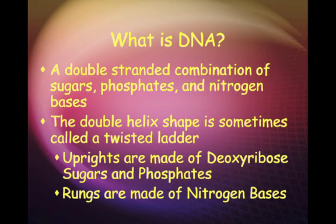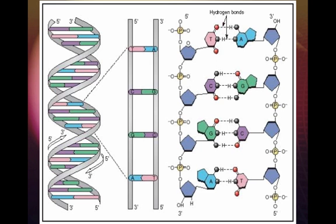DNA is a double-stranded combination of sugars, phosphates, and nitrogen bases. The double helix shape — sometimes called a twisted ladder — has uprights made of deoxyribose sugar and phosphates, and rungs made of the nitrogen bases. If you untwist the double helix, it would look just like a ladder. The bases are the rungs where you would step, and the uprights are the sugars and the phosphates.